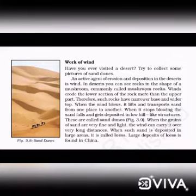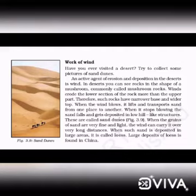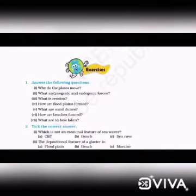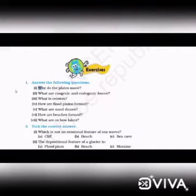An active agent of erosion and deposition in the desert is wind. In the desert, you can see rocks in the shape of a mushroom, known as mushroom rocks. Sand gets deposited in low hill-like structures known as sand dunes.